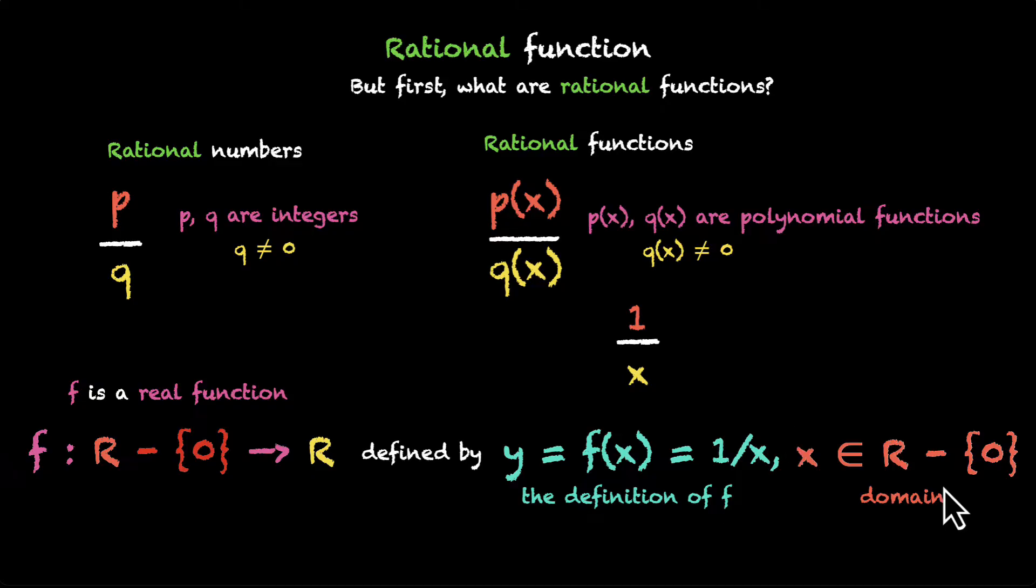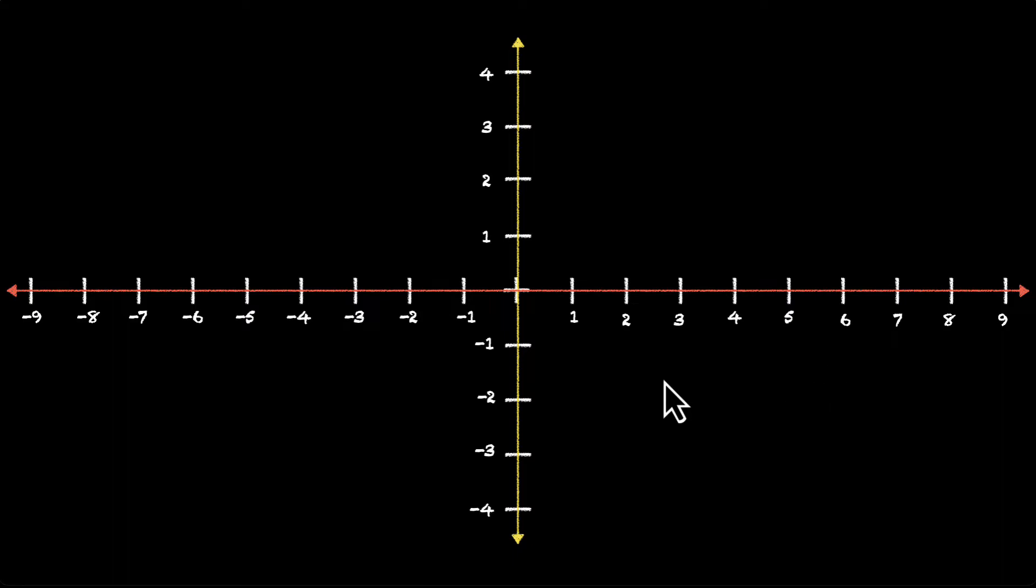And we're given that x can't take a value of 0. This means we are safe. Our denominator will never be 0. So this checks out. 1 by x is a rational function. All right. So now let's draw this graph. We have the x-axis. We have the y-axis. We want to draw y equals to 1 by x.